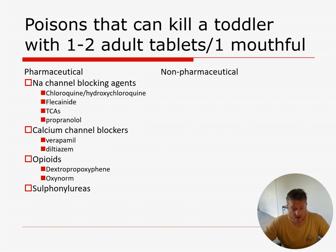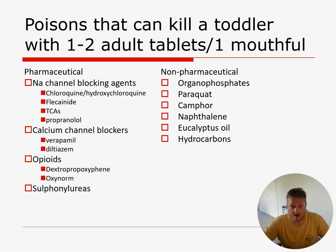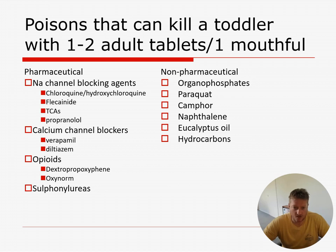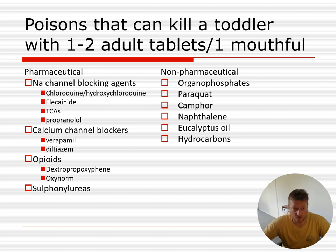Non-pharmaceuticals include organophosphates and paraquat — very tightly regulated here but very common in South Africa and India. Camphor is in Vicks VapoRub, naphthalene is in mothballs, and eucalyptus oil is lying around a lot. These can come in and it may be one of those ones where you read it on the triage board, because people don't know how dangerous it is. As soon as you see it on the board, you want to go see that patient and start your risk stratification and your RRSI DEAD.